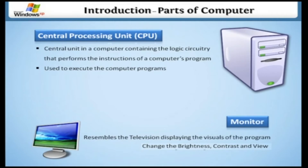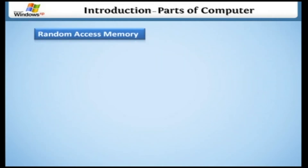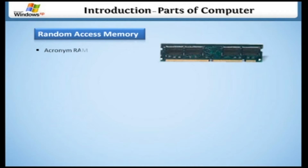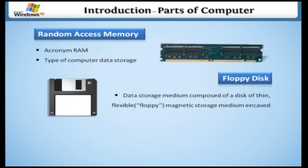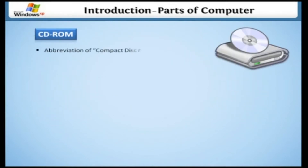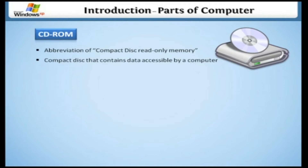Now it's time for some hardware knowledge. Random access memory, usually known by its acronym RAM, is a type of computer data storage. A floppy disk is a data storage medium composed of a thin, flexible, floppy magnetic storage medium encased in a square or rectangular plastic shell. CD-ROM, an abbreviation of compact disk read-only memory, is a compact disk that contains data accessible by a computer.